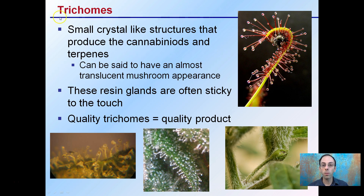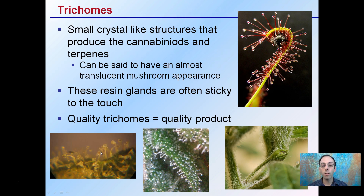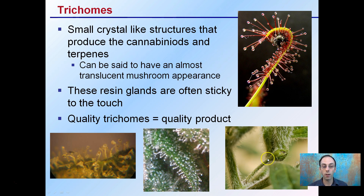Starting with trichomes. These are small crystal-like structures that produce the cannabinoids and terpenes. They can be said to have an almost translucent mushroom-like appearance, as we kind of see here and here. These resin glands are often sticky to the touch, and quality trichomes equal a quality product in cannabis. These are extremely sticky — like a sundew. These trichomes are capturing an insect here, but you may be more familiar with trichomes on something like a tomato plant where they also occur.